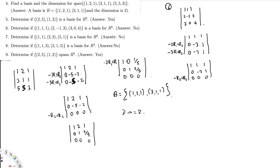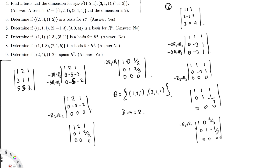So we already know this is not a basis for R3. Let's finish the row reduction anyway. Dividing row 2 by negative 3 gives 0, 1, minus 1 over 3. Then eliminating above the pivot: negative R2 plus R1 gives 1, 0, 4 over 3. So the RREF is: (1, 0, 4/3), (0, 1, -1/3), (0, 0, 0). Therefore, this is not a basis for R3 because we only have two linearly independent vectors. To be a basis of R3, we need three linearly independent vectors. So the answer is no.